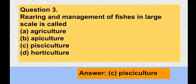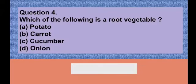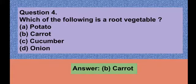Question number four: Which of the following is a root vegetable? Option A potato, option B carrot, option C cucumber, option D onion. The correct answer is option B — carrot. Carrot is a root vegetable.